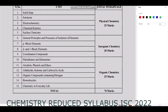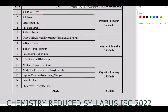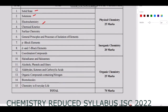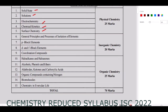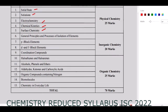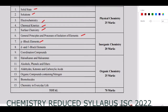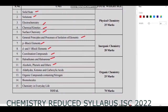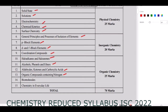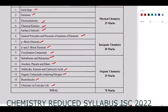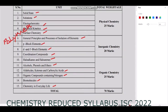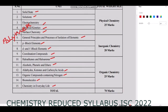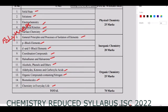First, the chapters we have are: Solid State, Solutions, Electrochemistry, Chemical Kinetics, Surface Chemistry, General Principles and Process of Metal Extraction (Metallurgy), P Block Elements, D & F Block Elements, Coordination Compounds, Alcohols, Phenols, Aldehydes, Ketones, Organic Compounds, Biomolecules, and Chemistry in Everyday Life. The Polymer chapter has been removed.